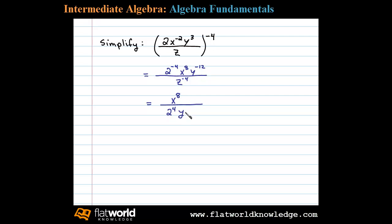Then finally z to the negative fourth power can be written as z to the positive fourth power in the numerator. Now all that's left to do is clean things up.